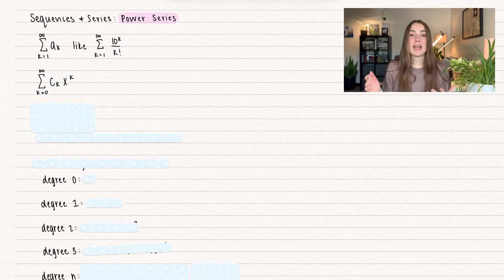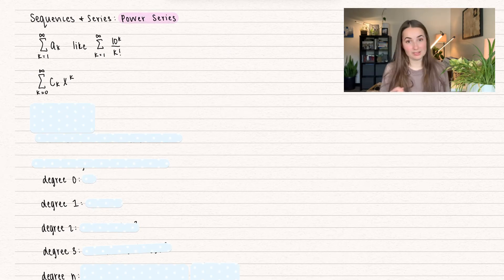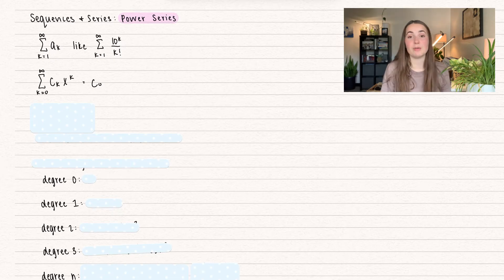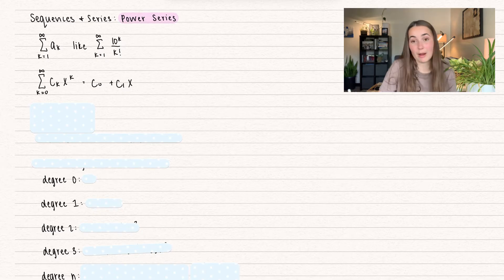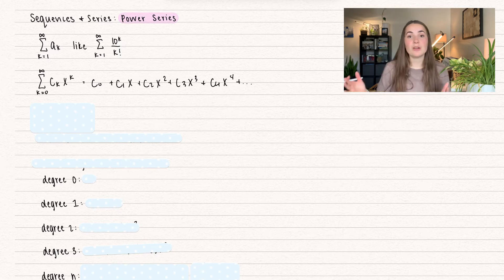A power series is where we actually have a function of x. We have the summation k equals 0 to infinity of c sub k times x to the power of k. Now c sub k — those are all just going to be scalars. So if I were to fill this out, first we would have c0 times x to the power of 0, which is just 1. That's going to be our first coefficient or scalar, plus c1 x to the power of 1, plus c2 x squared, c3 x cubed. Do you see the pattern? This is a function of x — we are getting greater in the power of x.